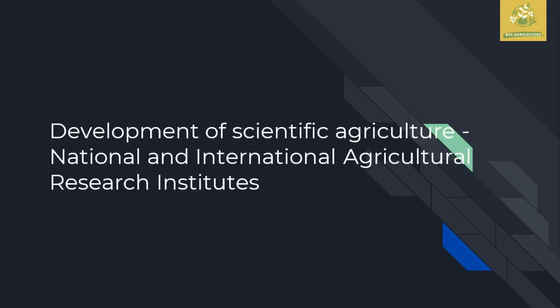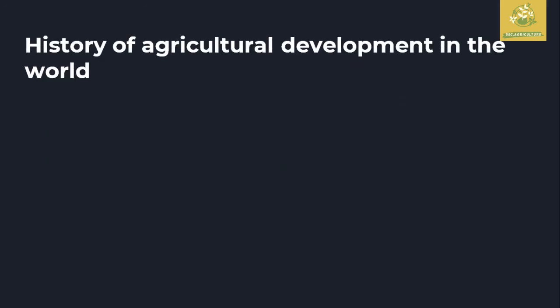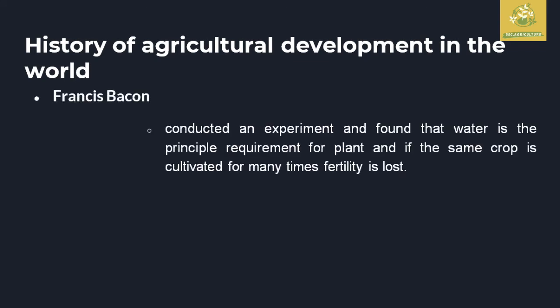The topic is about the development of scientific agriculture and national and international agriculture research institutes in the world. The first development in the history of agriculture was made by Francis Bacon, who used to conduct different agronomy experiments on plants — about what the principal requirements of a plant are when cultivated in fertile soil.